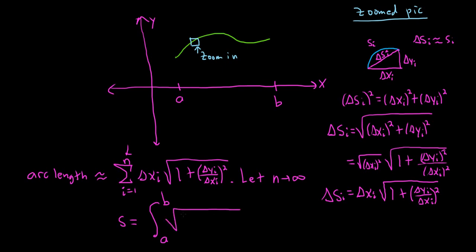And here we have the square root of 1 plus. So this is going to become like a derivative, right, delta y over delta x sub i. So this will be like f prime of x, or dy dx, but I'll just call it f prime of x squared. And then this will become like your dx. So this will be the arc length. So that's just a really rough explanation of how to come up with the arc length. But that's the intuition behind it.